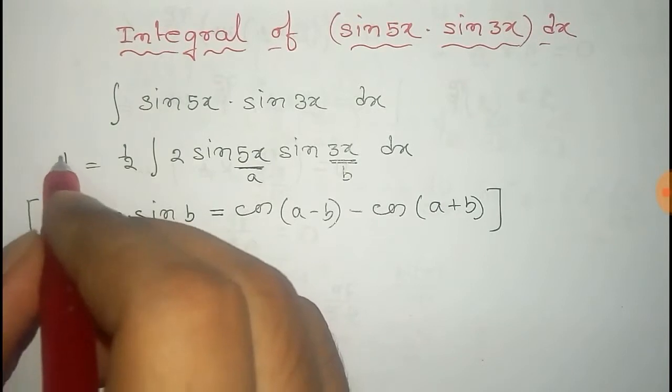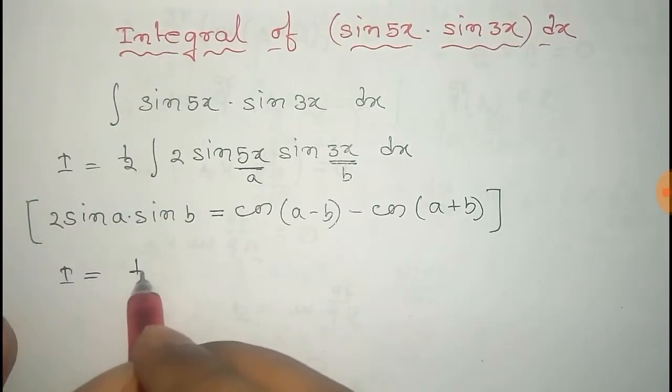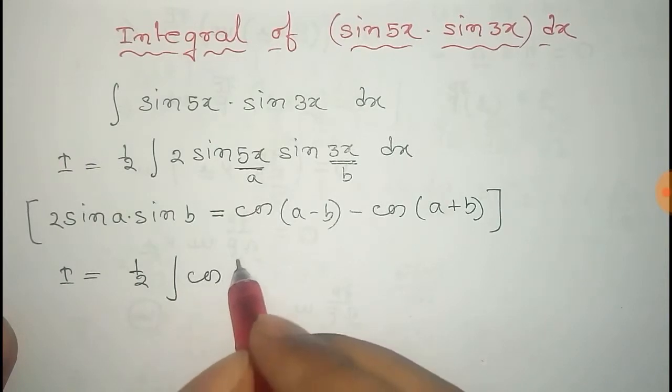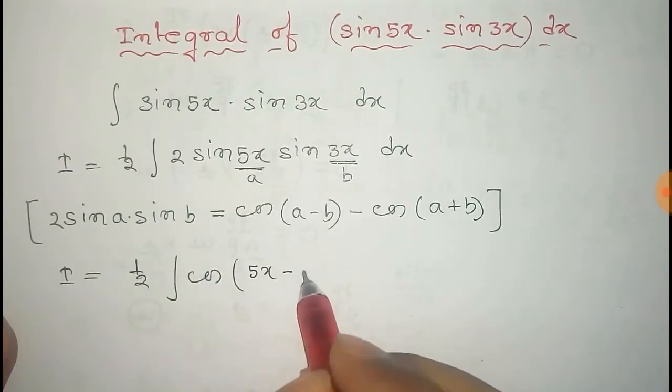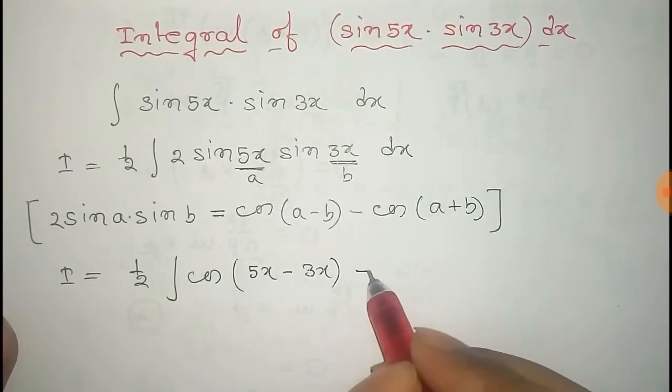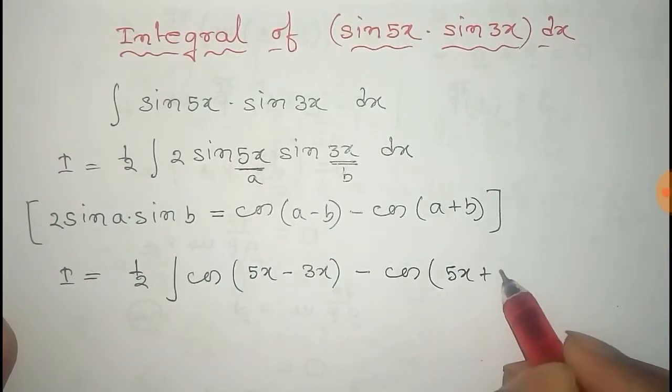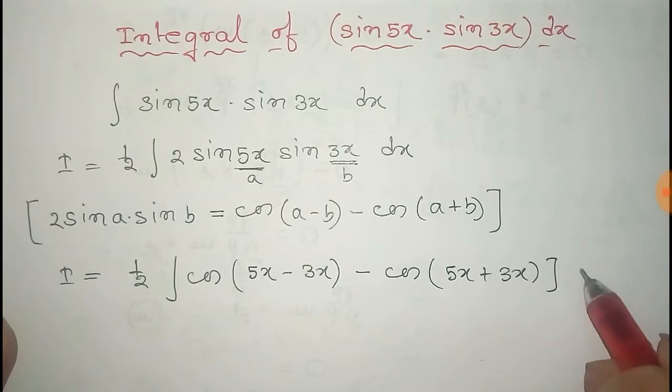So after applying this formula we get that is equals to i equals to half integral that is cosine 5x minus 3x minus cosine 5x plus 3x dx.